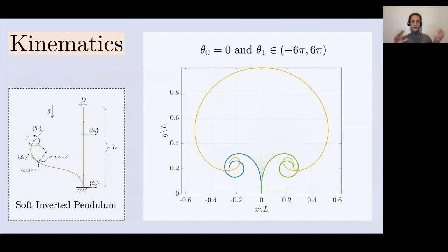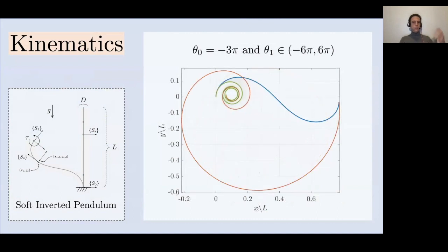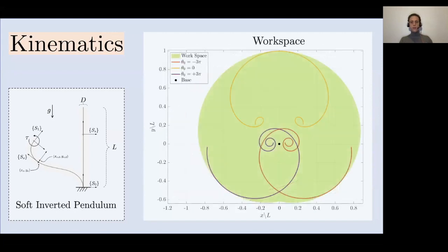To let you understand how general this kinematic behavior is, we can look at what happens to the robot when we take theta zero equal to one and we move theta one. This is another example for theta zero equal to minus three pi, and this is how the whole workspace looks like.